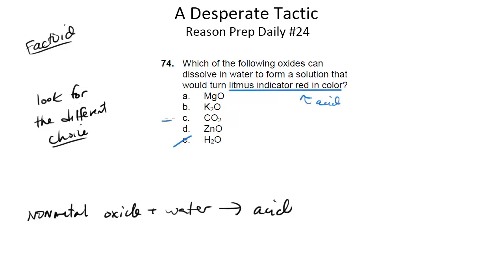But if you look at C, there is quite a difference in the sense that this C is a non-metal oxide. In other words, it's got a non-metal in it, carbon. Whereas the other three, magnesium, potassium, and zinc are all metals.